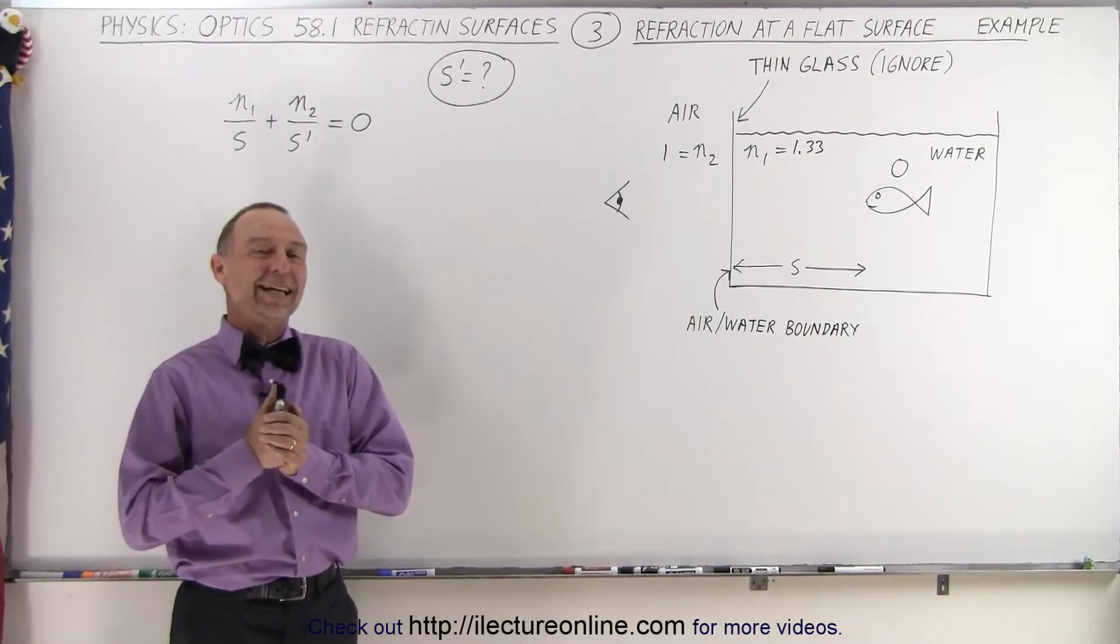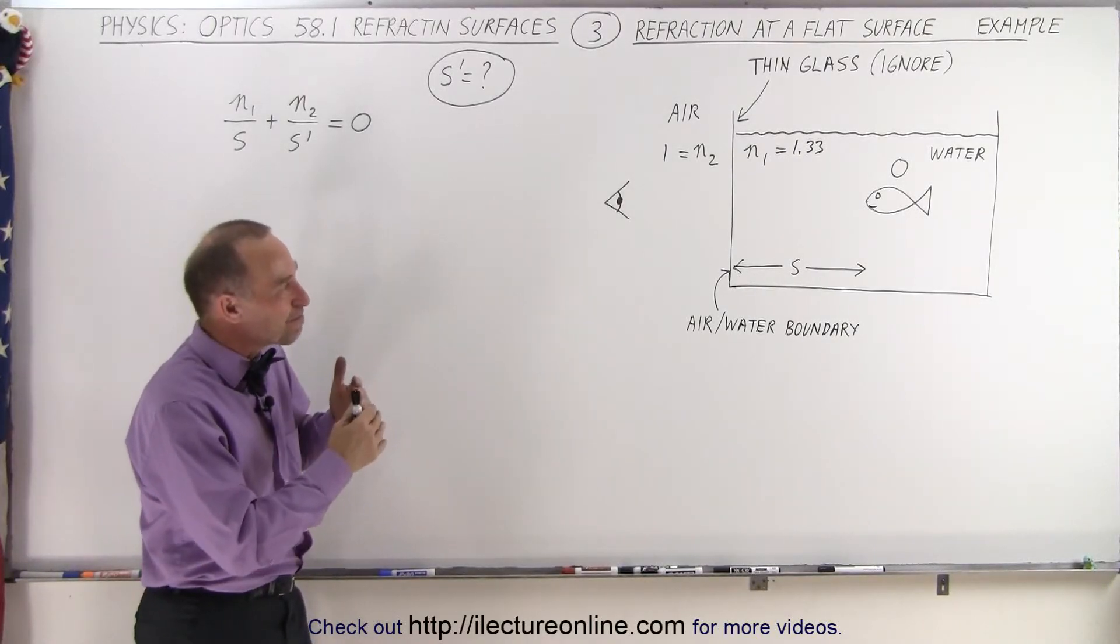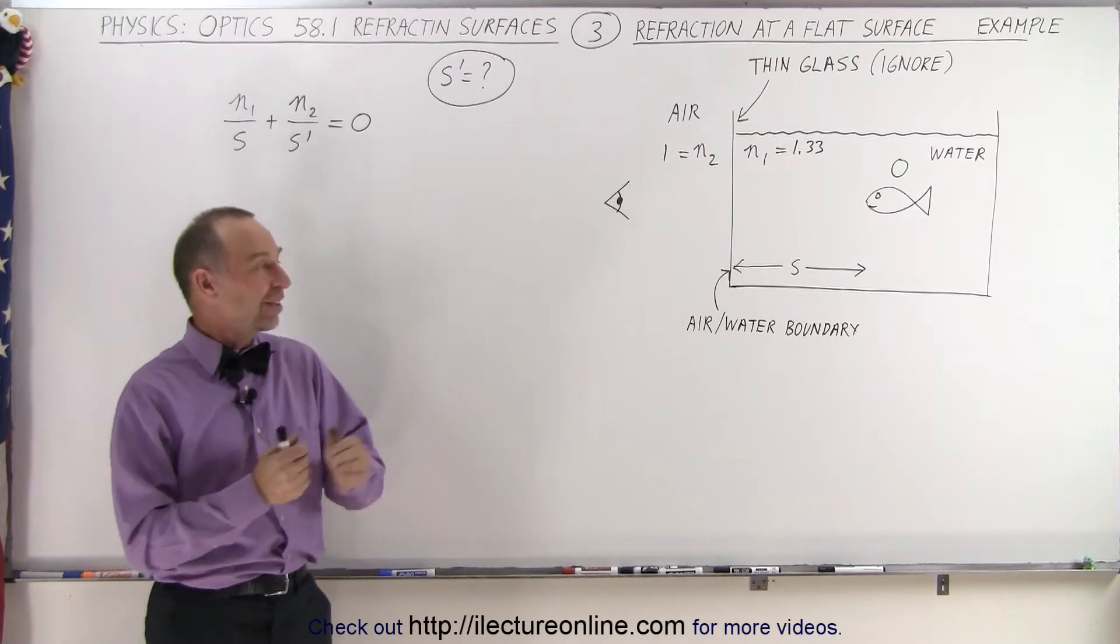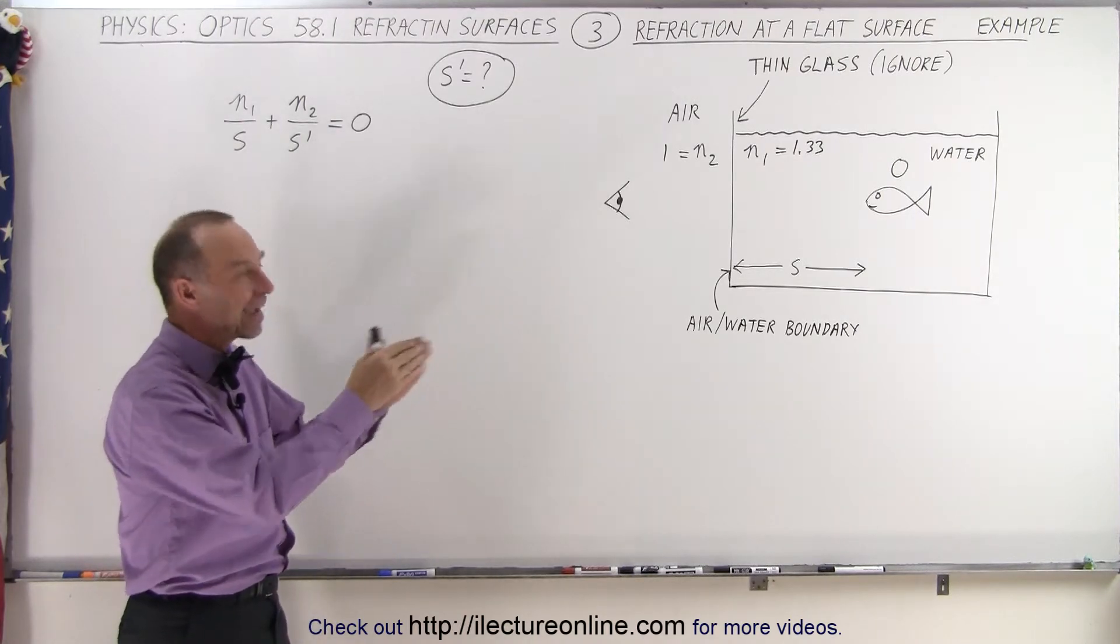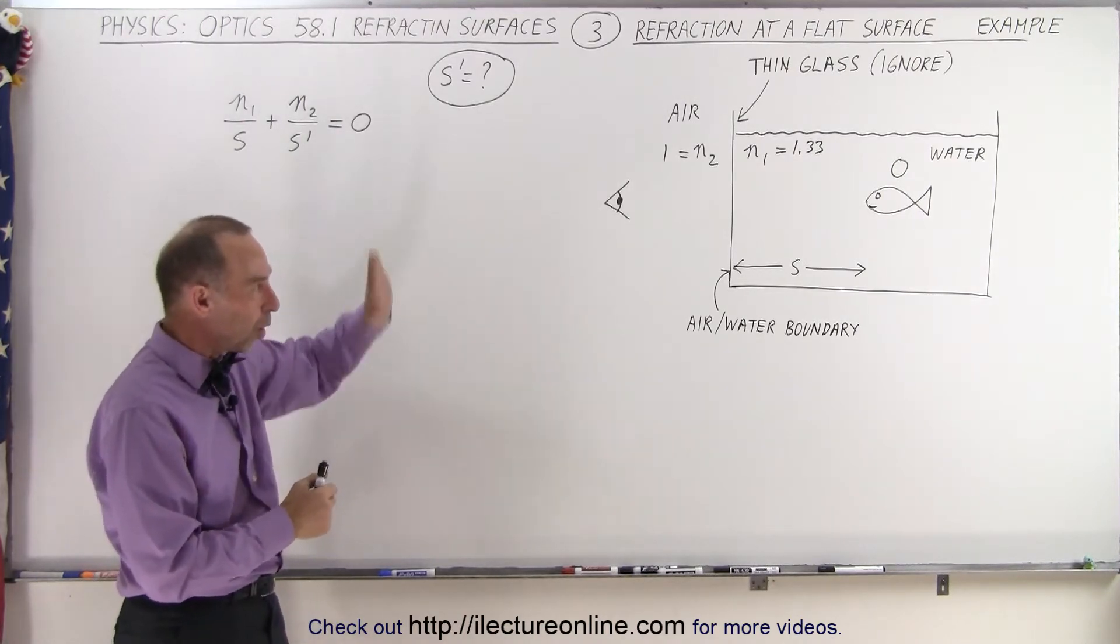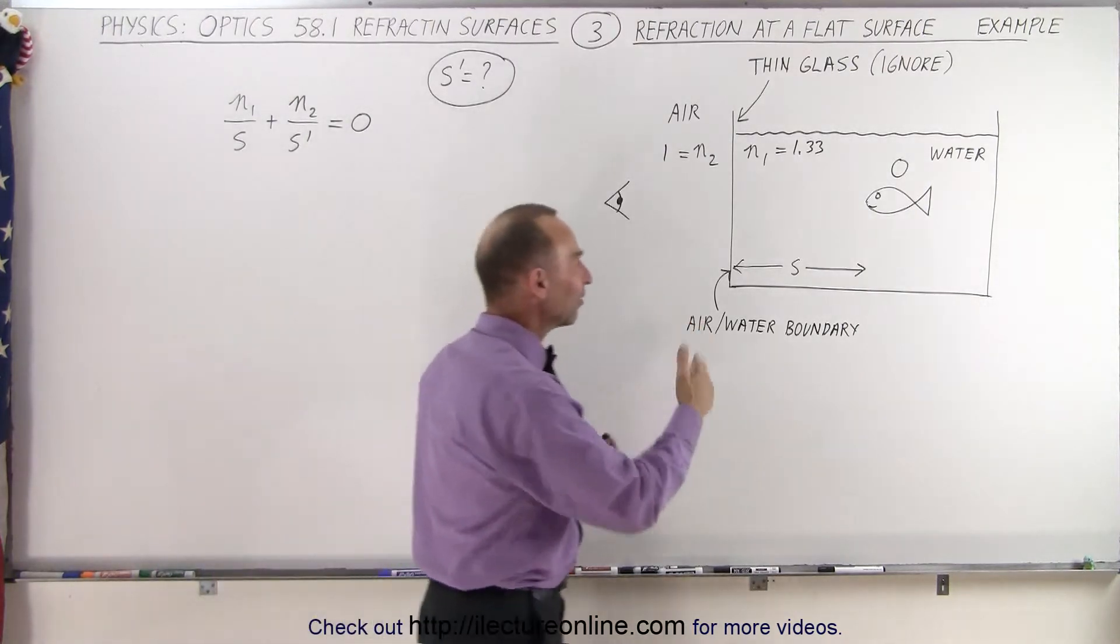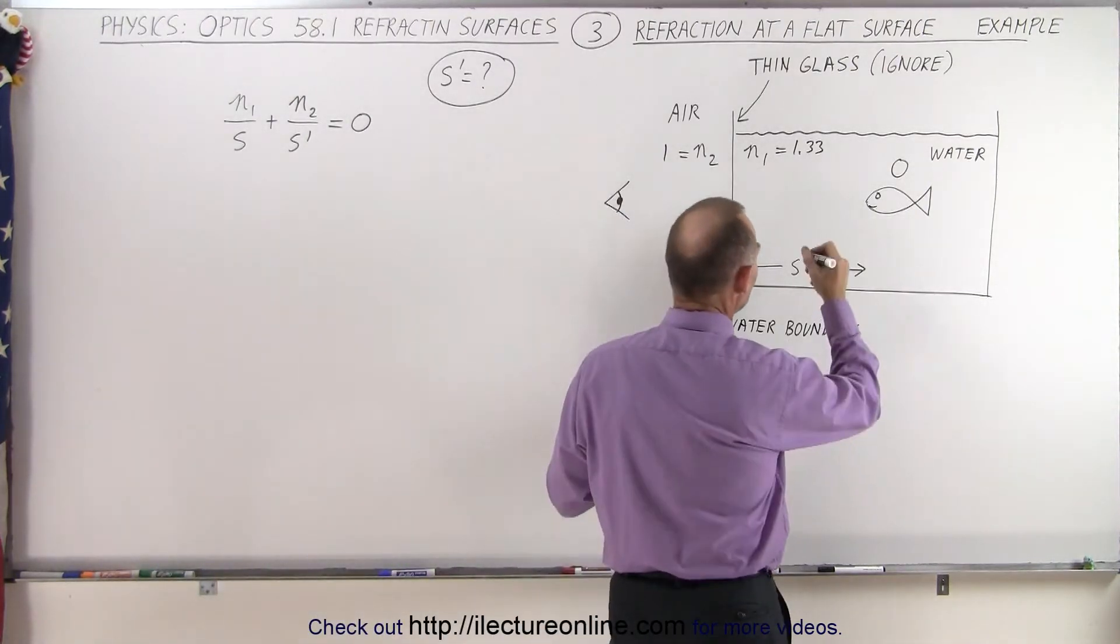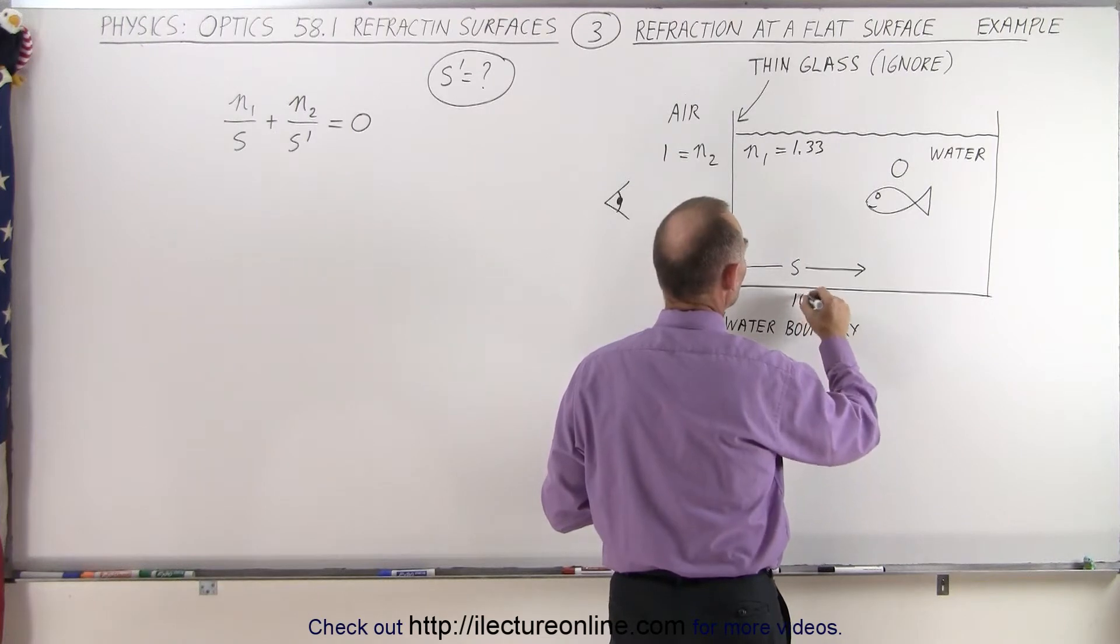Welcome to our lecture online. Now here we have a slightly more realistic example. Let's say that an observer looks inside a fish tank through the glass wall and sees a fish at some distance S behind the wall. And let's say that S is equal to 100 centimeters.